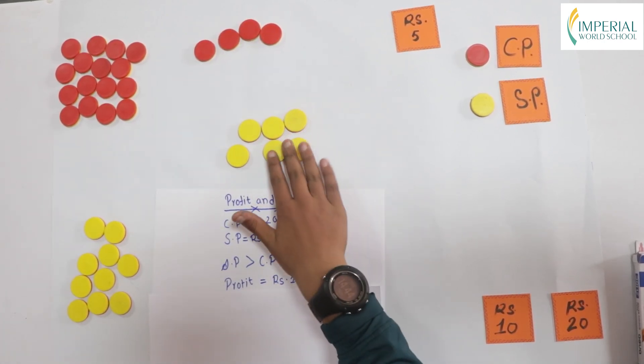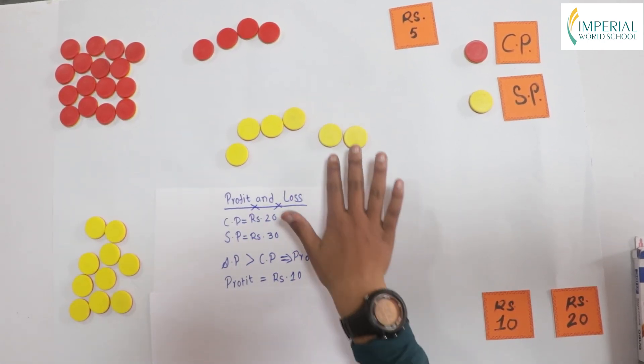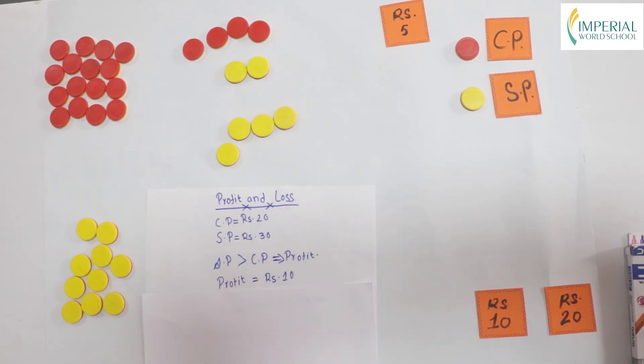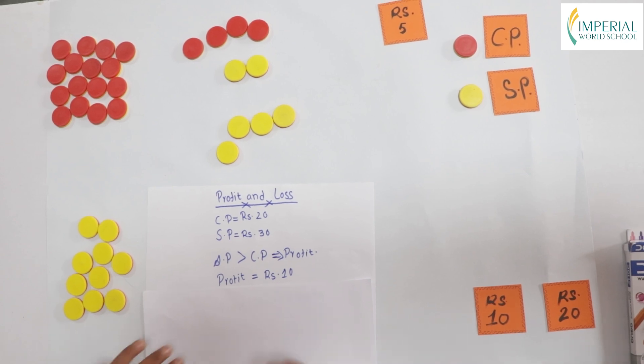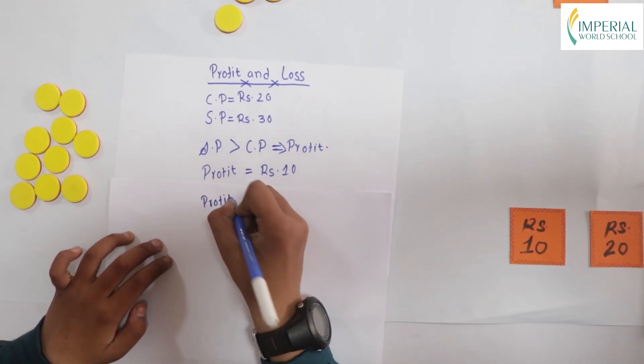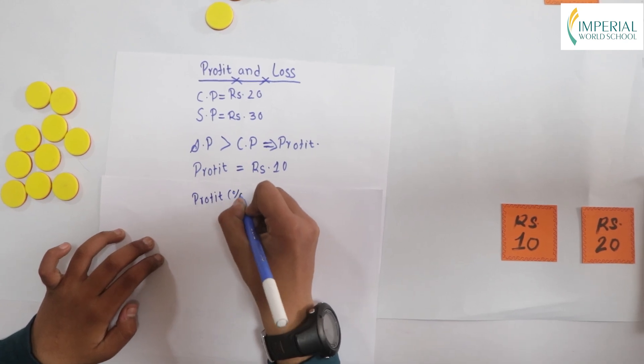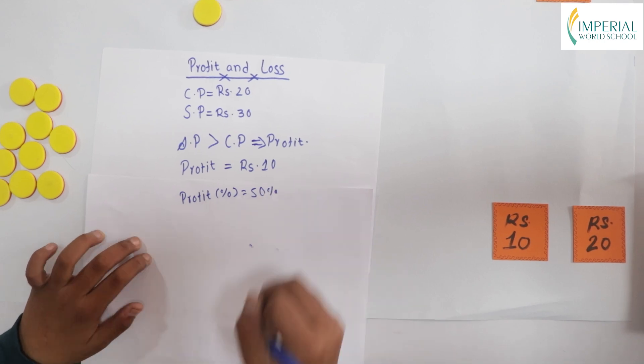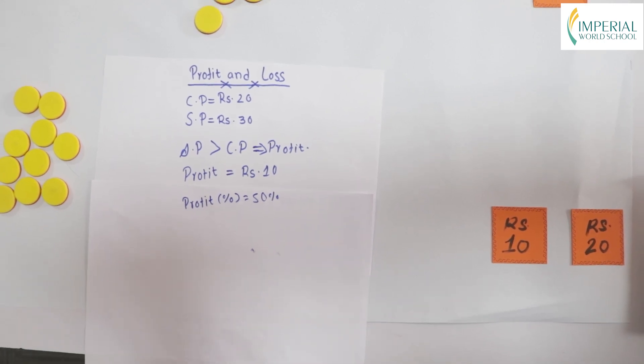As we know that we had 2 tiles left and 2 out of 4 is 50 percent. So, our profit percent is 50 percent.